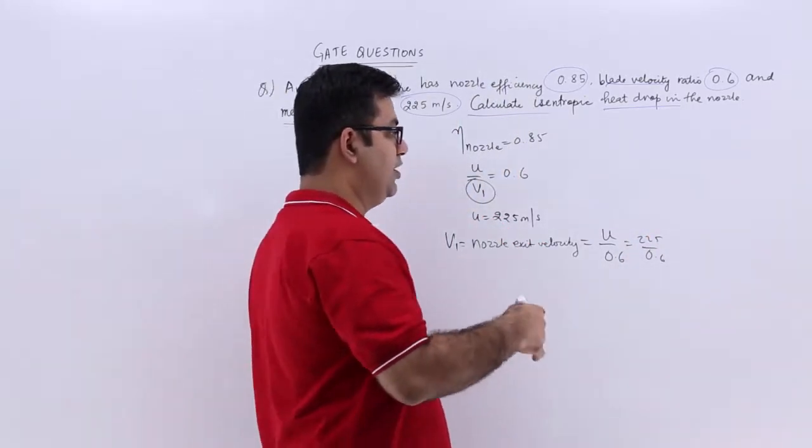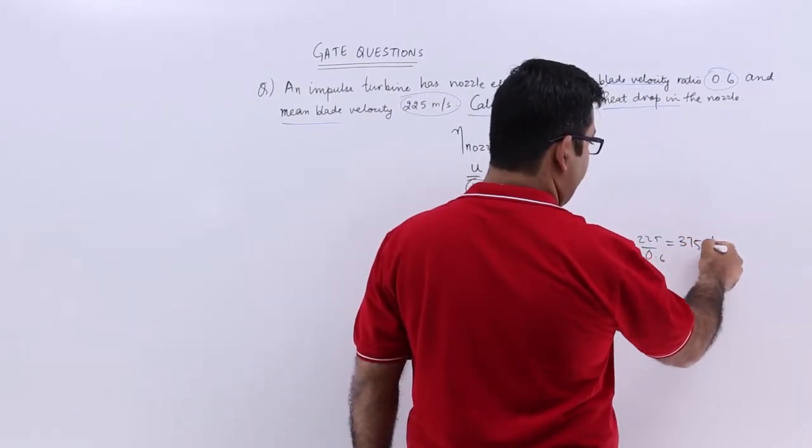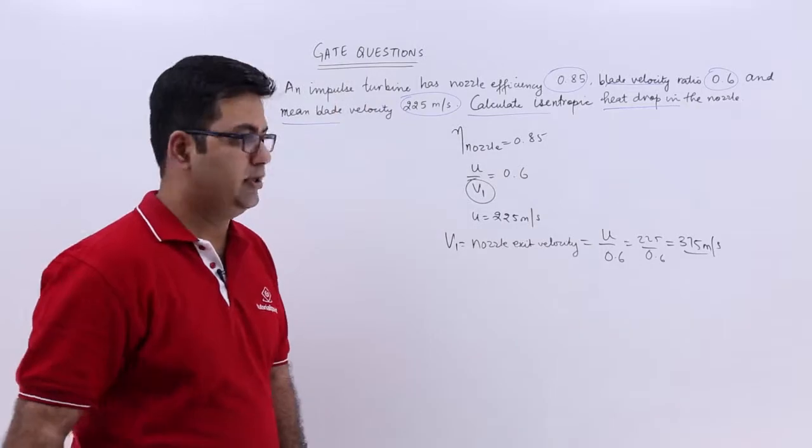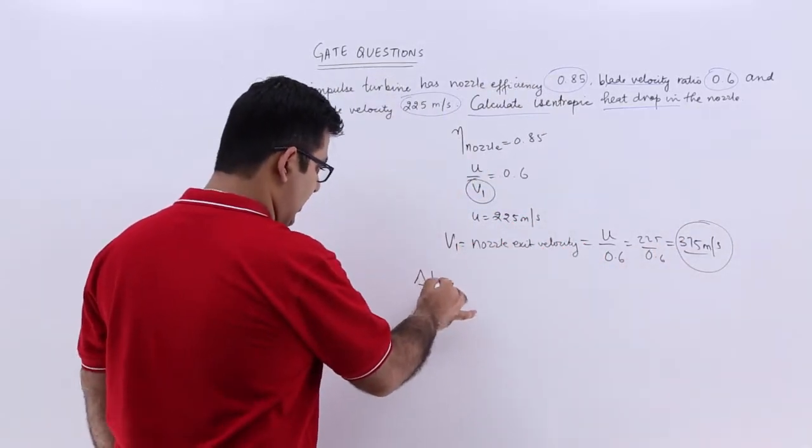So 225 by 0.6 is 375 meters per second. Now with this velocity in hand, we can calculate the enthalpy drop.